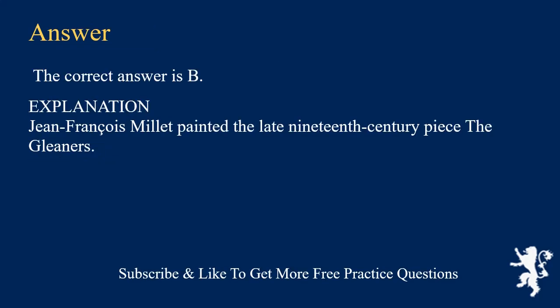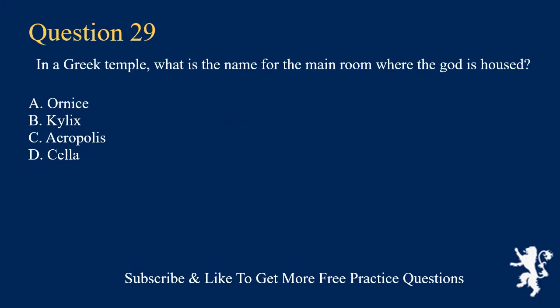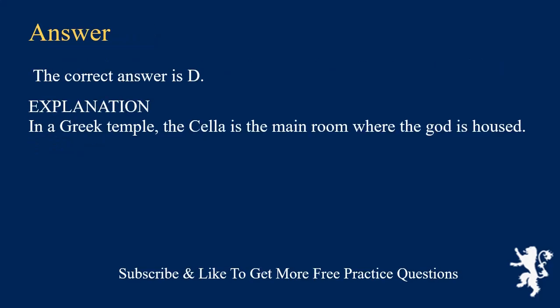Explanation: Jean-François Millet painted the late 19th century piece The Gleaners. In a Greek temple, what is the name for the main room where the god is housed? A. Ornis. B. Kylix. C. Acropolis. D. Cella. The correct answer is D.